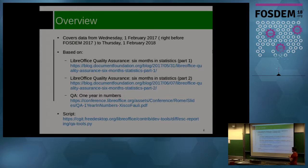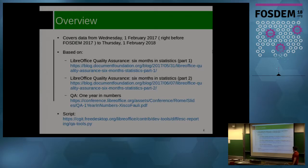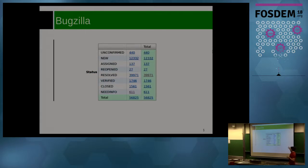I based this talk on a couple of blog posts I did during this year where I shared some statistics in Bugzilla. I also did a similar talk at the LibreOffice conference in Rome, but here I'm adding more information. To get the data, I used a script that you can use or even improve. This is the general view of LibreOffice Bugzilla right now — we have almost 57,000 bugs reported in total.